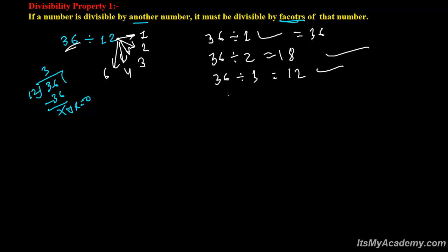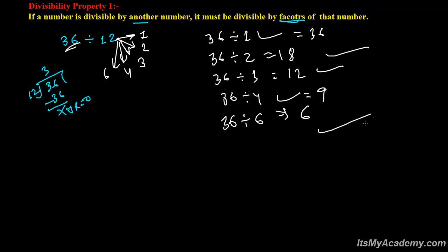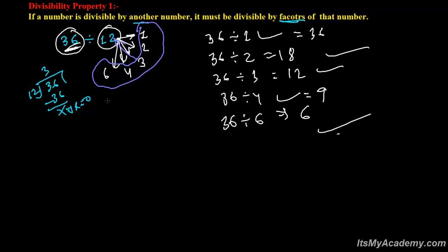36 is also divisible by 4 — you get 9. And 36 is divisible by 6 as well — you get 6. So if 36 is divisible by 12, then 36 must be divisible by all these factors of 12.